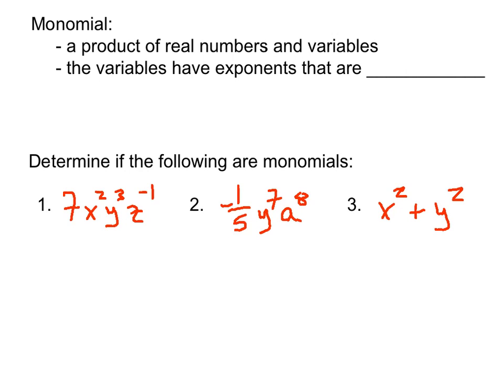In this class we're going to learn about monomials and polynomials. A monomial is a product — meaning multiplication — of real numbers and variables. So just a string of multiplication, only multiplication, where we have real numbers and variables.